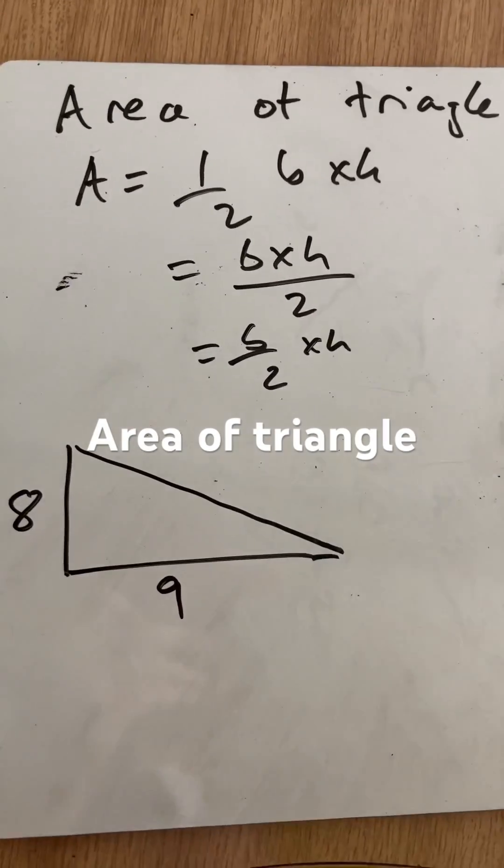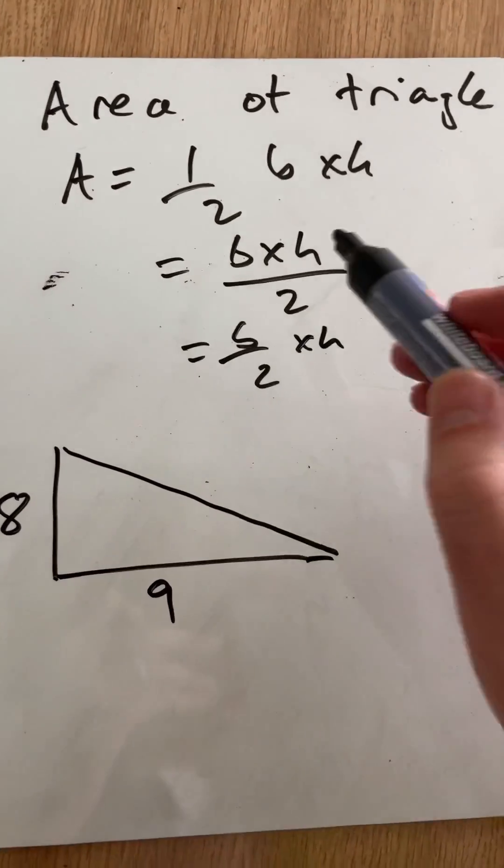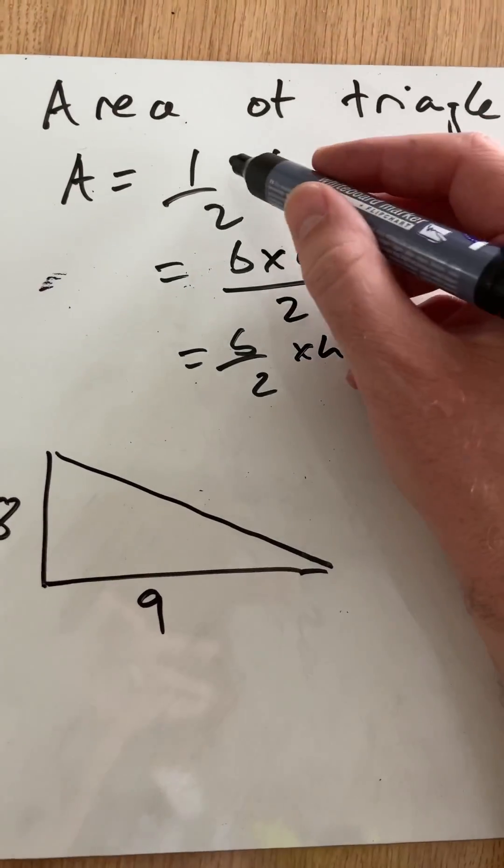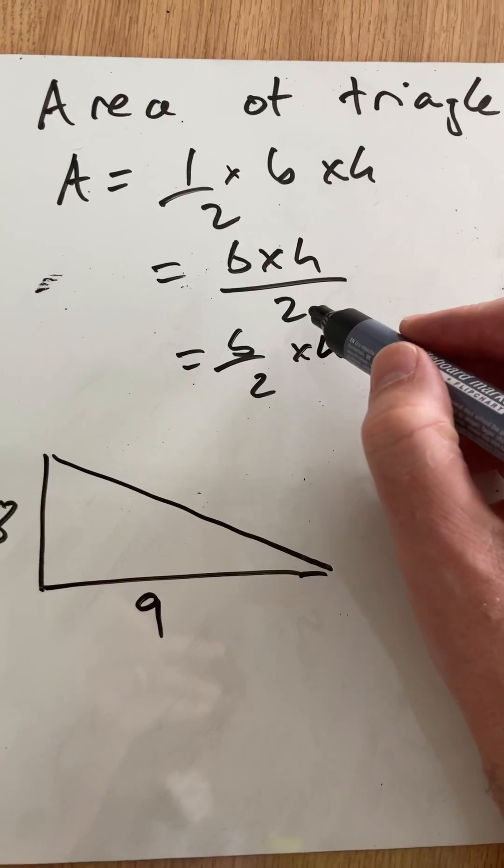Hello and welcome to your Martin Maths, doing another short on the area of a triangle. We have the formula that it's half the base times the height. Now sometimes it's easier to understand that that's the same as base times height divided by 2.